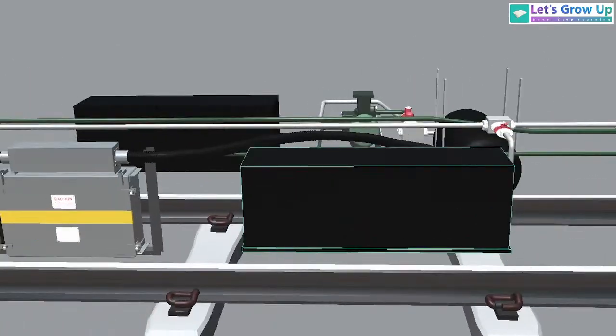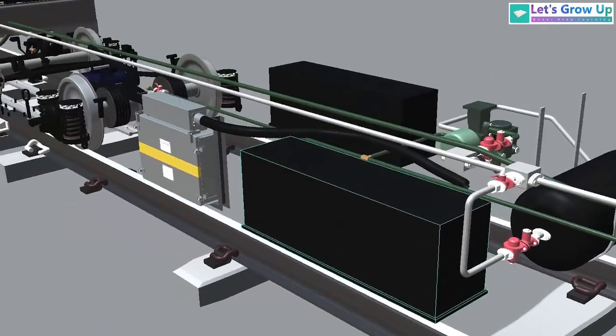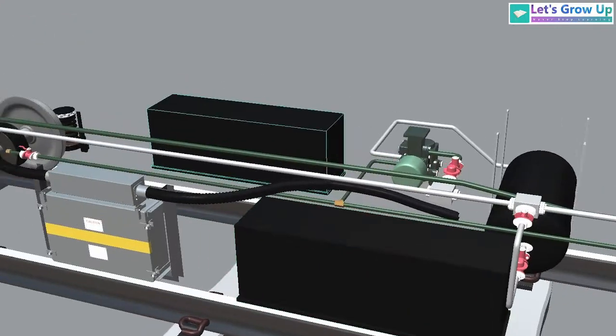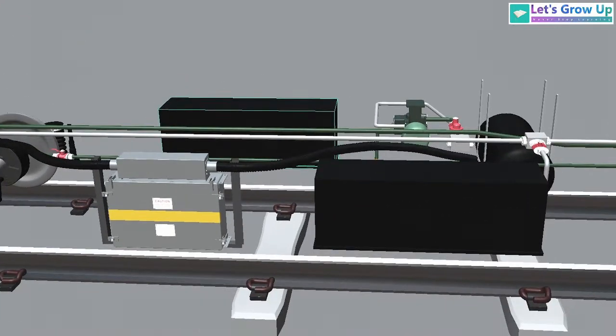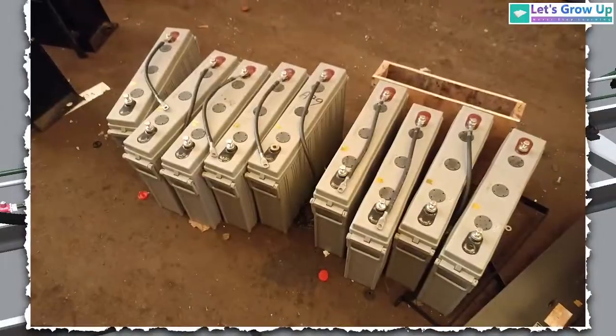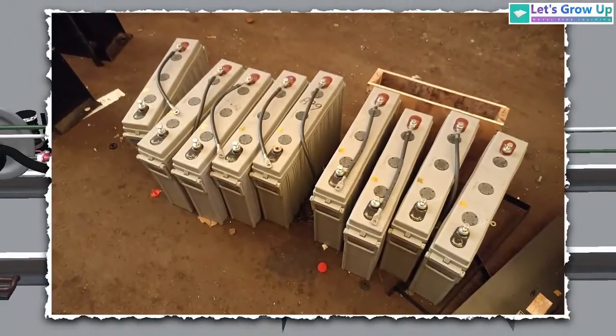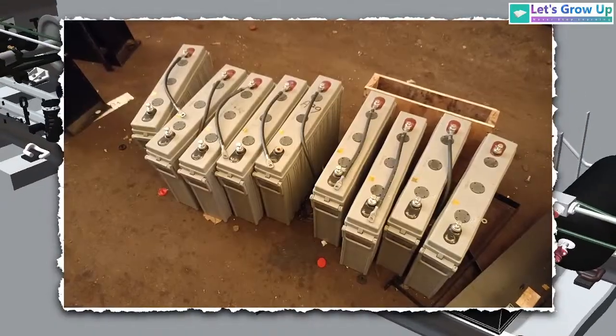If you look under the coach, you will see the battery boxes. Inside these boxes is a series of batteries that store energy to keep the lights and fans running even when the train comes to a halt.